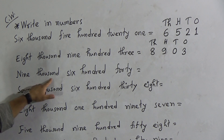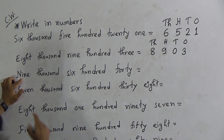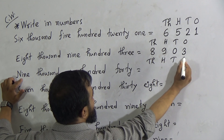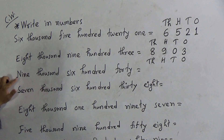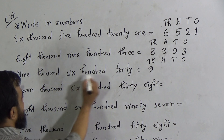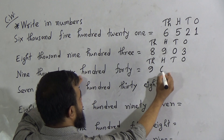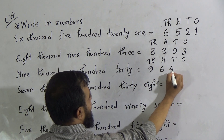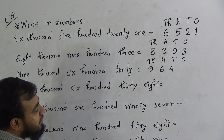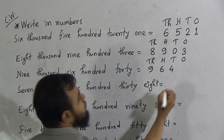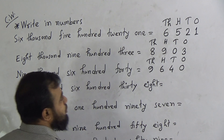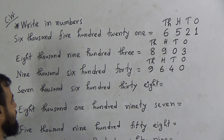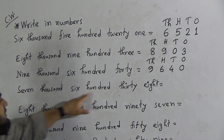The next number is 9640. Again: Thousands (Th), Hundreds (H), Tens (T), Ones (O). Nine thousand means 9 goes in the thousands place. Six hundred means 6 goes in the hundreds place. Forty means 4 goes in the tens place. There is no number in the ones place, so the ones place is filled with the digit 0. So 9640 is written as 9 | 6 | 4 | 0.